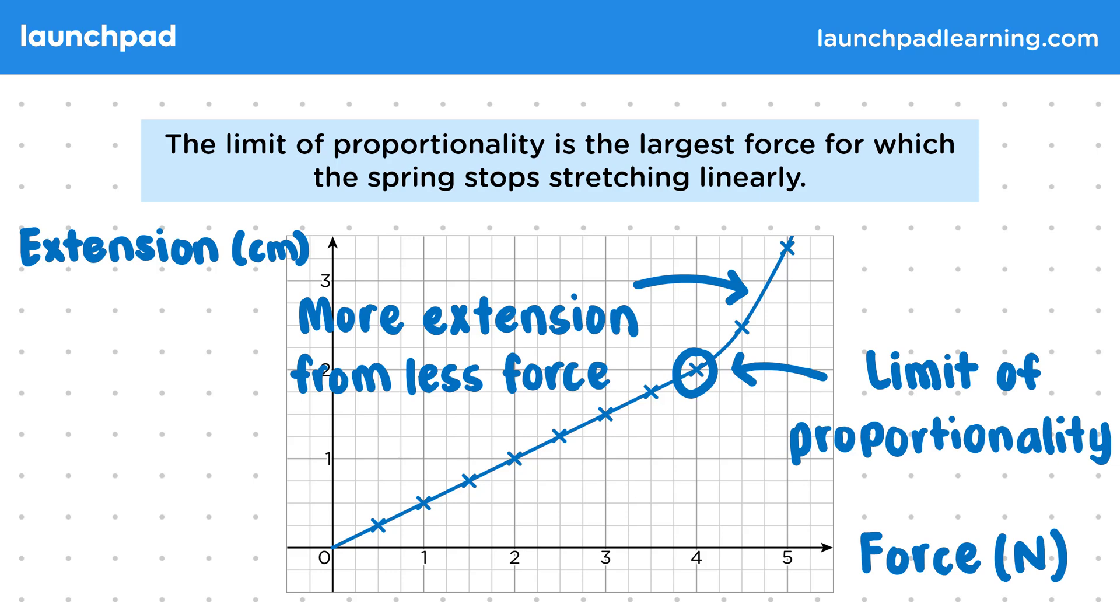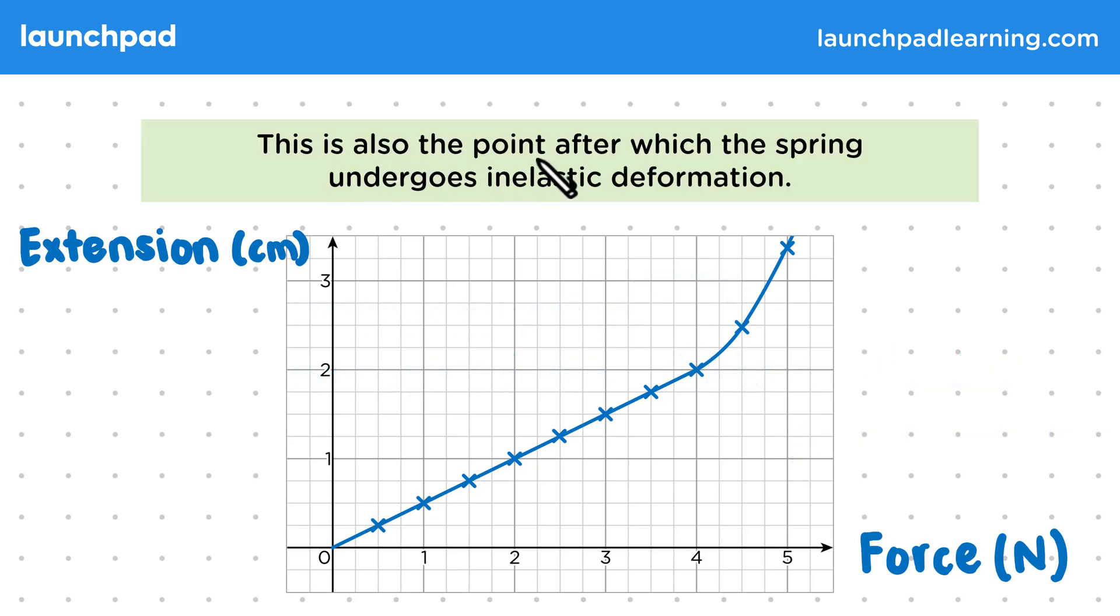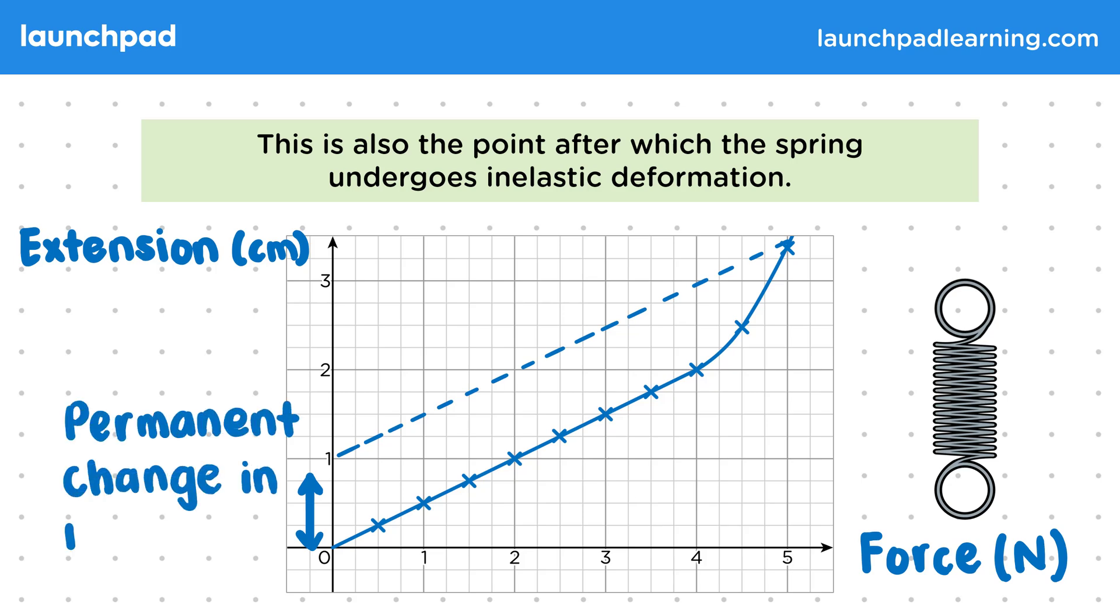So what else does the limit of proportionality tell us? Well this is also the point after which the spring undergoes inelastic deformation. As the force is gradually removed the extension of the spring changes. The spring is now permanently deformed as it still has some extension even when there is no force applied so there is a permanent change in length.